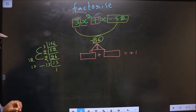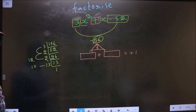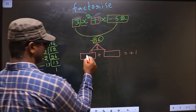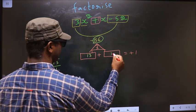13 into 12 is 156. 13 minus 12 is 1. So now here I write 13 and here I write 12.